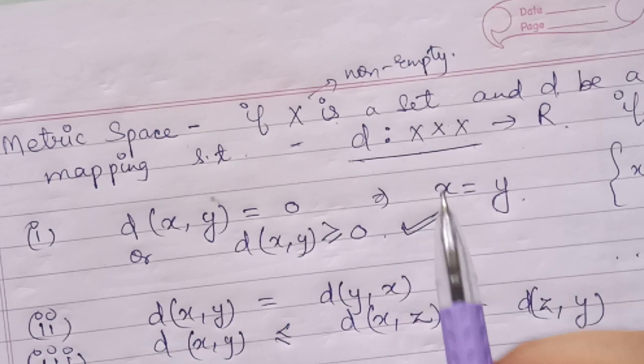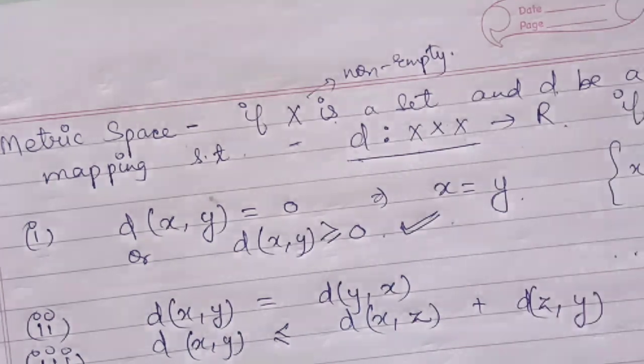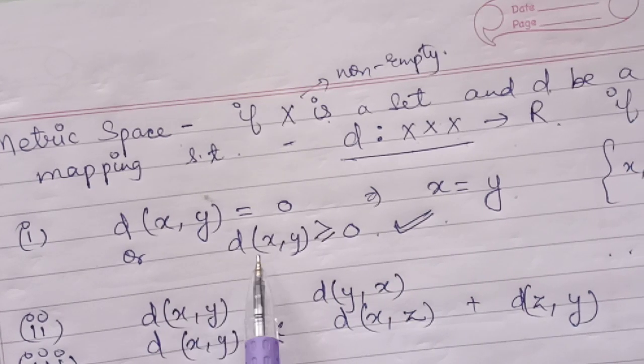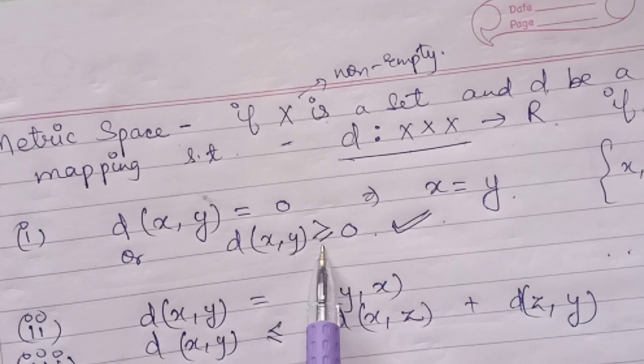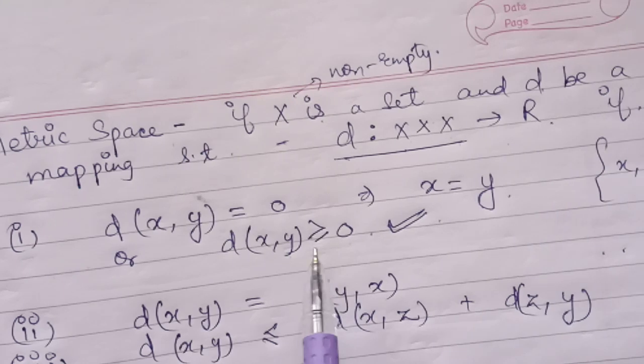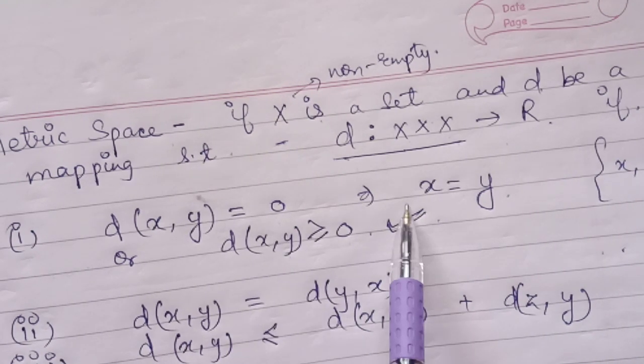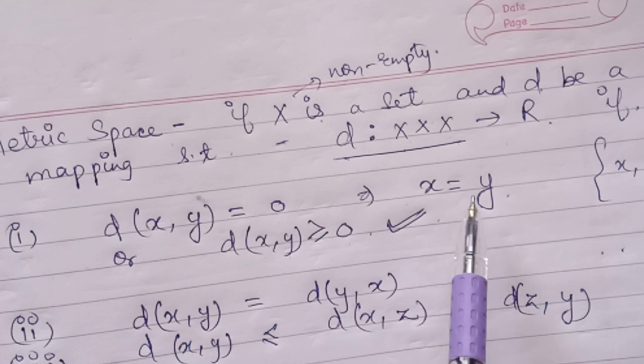Then X is called a metric space if three conditions are satisfied. The first condition is distance between x, y is always greater than or equal to 0, and if distance between x, y equals 0, that implies x equals y.